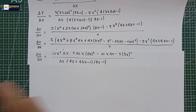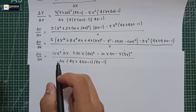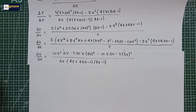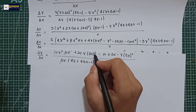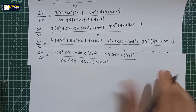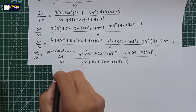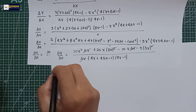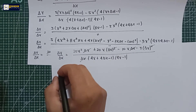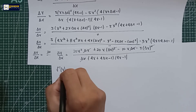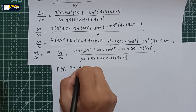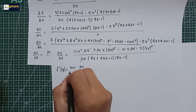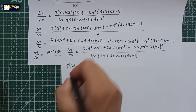We can also cancel out delta x by factoring out one delta x from the numerator. After canceling delta x, the last and final step is to find the limit. Using the definition — the first principle — f prime of x is equal to the limit of delta y over delta x as delta x approaches 0.